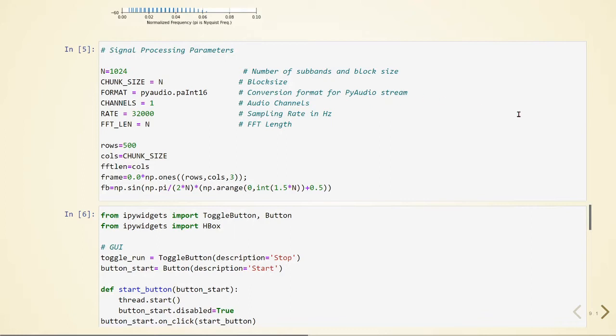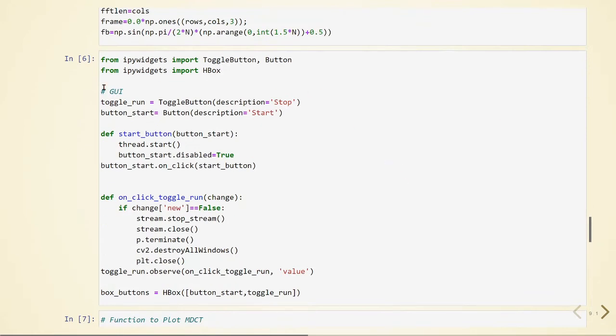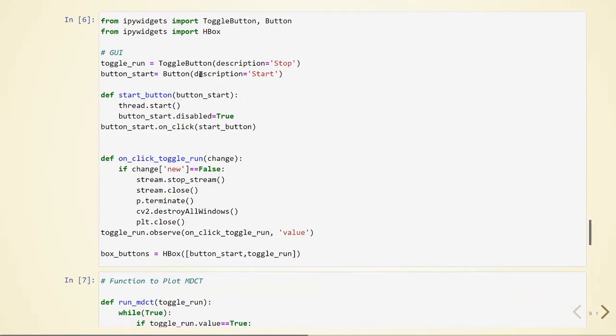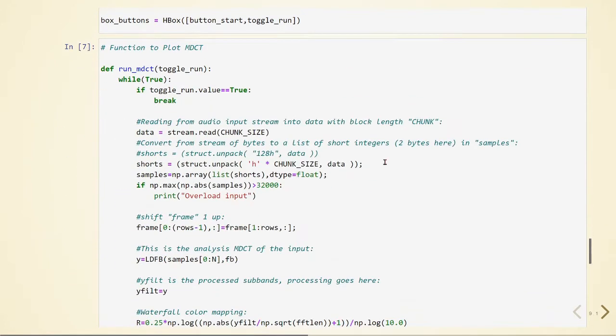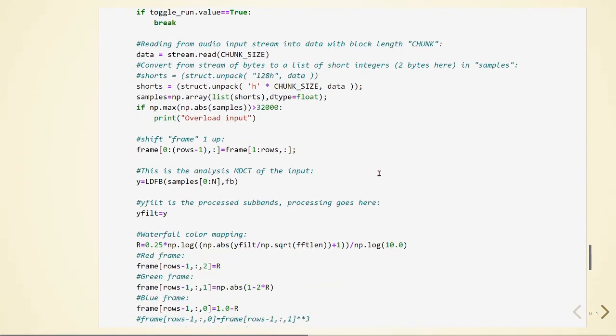In this we define some parameters like block size, the format of the stream, the number of channels, the sampling rate. Also, we are using a GUI, just the start and stop button. This is just what I am doing here.